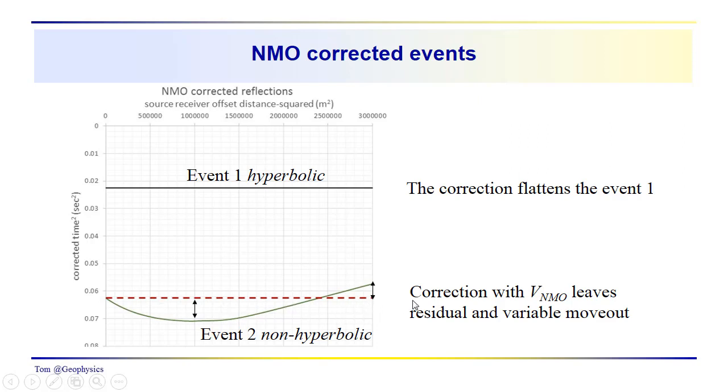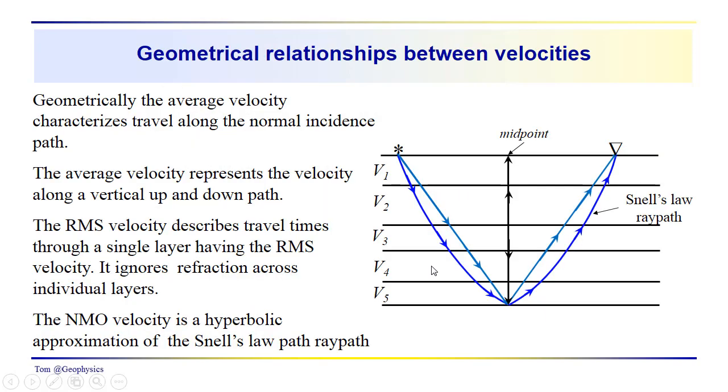You can see where the NMO velocity, the NMO correction by itself, brings those events close to a flat line, close to being close to a line which would sum those events together in phase, but not quite exactly. So some residual moveout correction is needed.